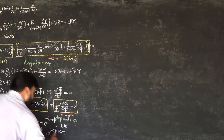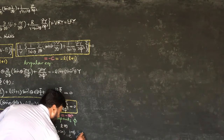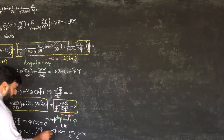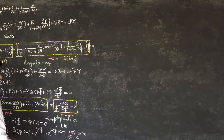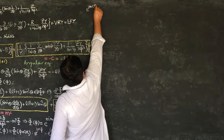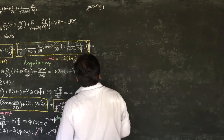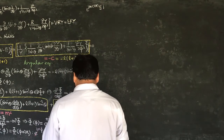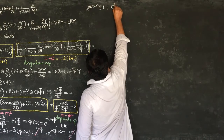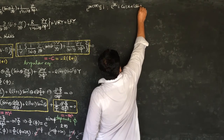We can write e^(im(φ+2π)) = e^(imφ) · e^(im2π). The factor e^(imφ) cancels from both sides, leaving e^(im·2π) = 1. Now expanding using Euler's formula: e^(im·2π) = cos(2πm) + i·sin(2πm).